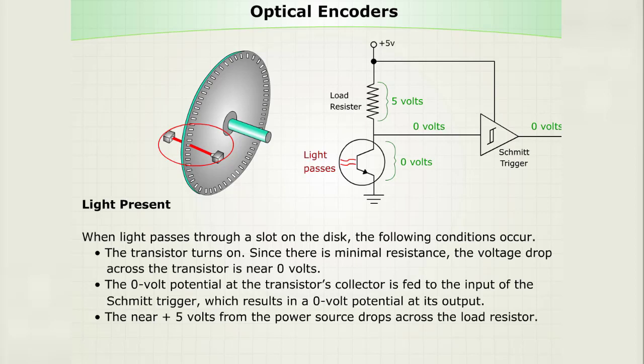The zero volt potential at the transistor's collector is fed to the input of the Schmitt trigger, which results in a zero volt potential at its output. The near positive five volts from the power source drops across the load resistor.